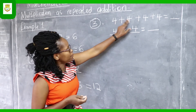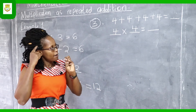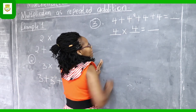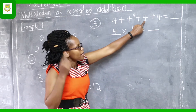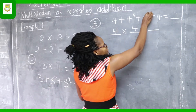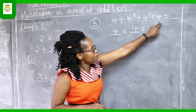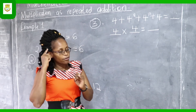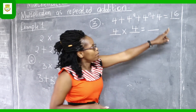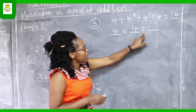Just as before, we add the first two fours: four on our fingers, then four, five, six, seven, eight. We write eight here. Eight plus four: eight, nine, ten, eleven, twelve. We write twelve here. Continuing, twelve plus the final four: twelve, thirteen, fourteen, fifteen, sixteen. Finally, sixteen is our answer. Four times four gives us sixteen.